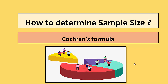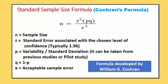In this video we are going to understand Cochran's formula with the help of some numerical examples. This video will be useful to determine the sample size for your PhD thesis, for your summer internship project, or dissertation.